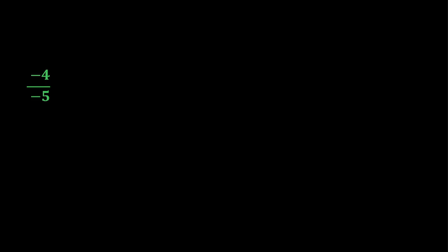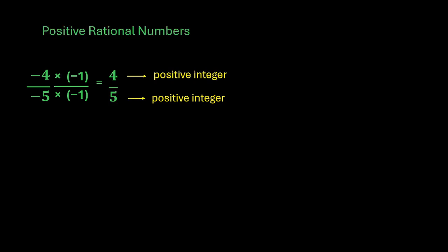Now, let us look at this number, minus 4 by minus 5. Again, when the denominator is negative, we will aim to make it positive. So, for that, we will have to multiply and divide this number by minus 1. And this will then become 4 by 5. Both the numerator and the denominator are positive integers. So, this is a positive rational number.